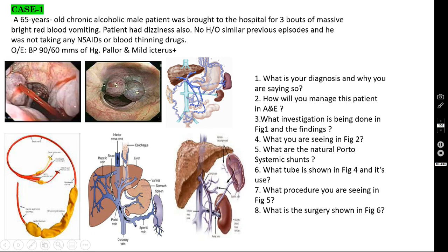The next procedure is TIPS — Transjugular Intrahepatic Portosystemic Shunt. A shunt is placed between the portal vein and hepatic vein so that blood from the portal vein bypasses into the hepatic vein, relieving portal hypertension. This is usually performed by an interventional radiologist. However, it is not a permanent solution — the shunt may thrombose after one to two years.